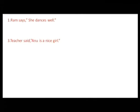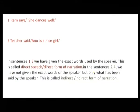Now if we go into the details, the first sentence given is: Ram says, she dances well. Ram is saying that she dances well. There is another sentence: Teacher said, Anu is a nice girl. The teacher is saying that Anu is a nice girl. I have marked these sentences number 1 and 3. If we go to these sentences.